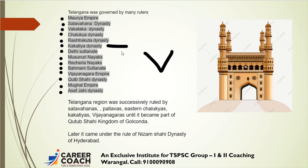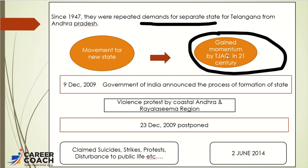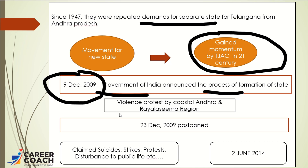Since 1947, the people of Telangana continuously demanded a separate state from Andhra Pradesh. This movement achieved its highest momentum in the 21st century through TJAC — the Telangana Joint Action Committee. After several revolts, the Government of India announced the process of formation of the state on 9th December 2009. Immediately, people in coastal Andhra and Rayalaseema started violence, and the decision was postponed to 23rd December 2009. Telangana state was finally achieved on 2nd June 2014.